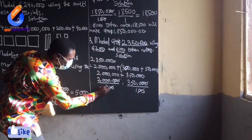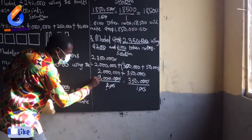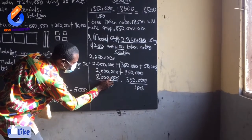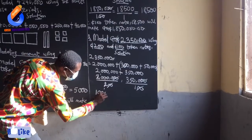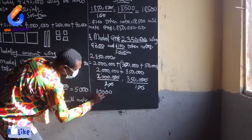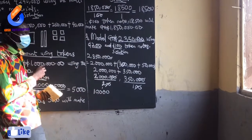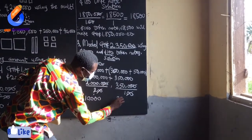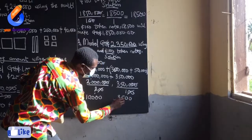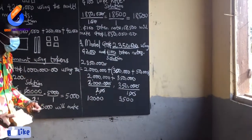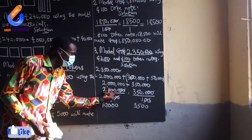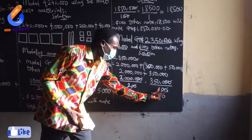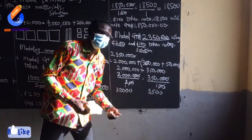I will let the 200-cedi token take 2,000,000 and the 100-cedi token take 350,000. So: 2,000,000 divided by 200 — two zeros cancel two zeros, leaving 10,000 divided by 2, which is 10,000. And 350,000 divided by 100 — two zeros cancel, leaving 3,500. So 200-cedi notes give 10,000, and 100-cedi notes give 3,500.